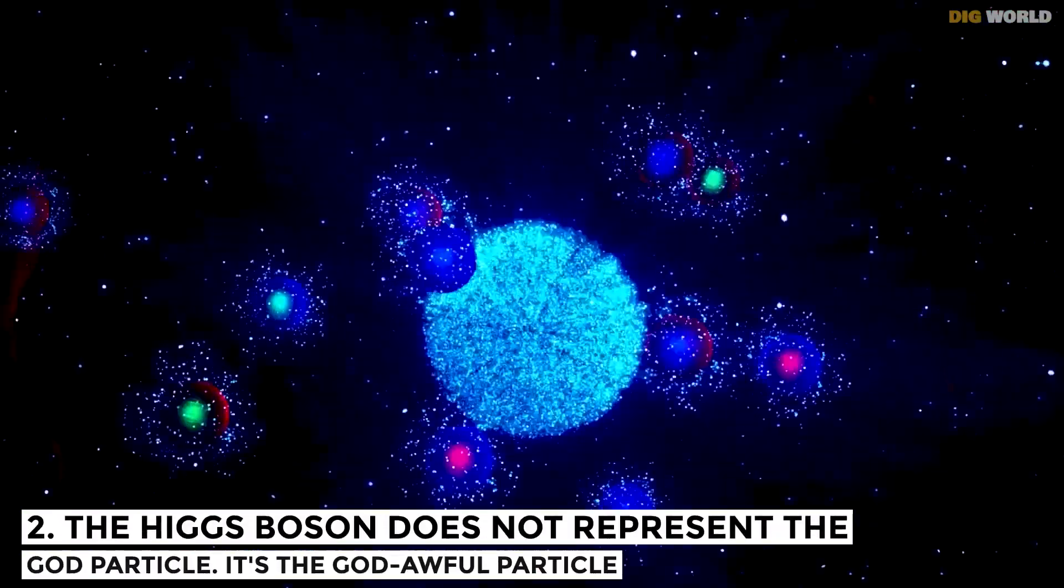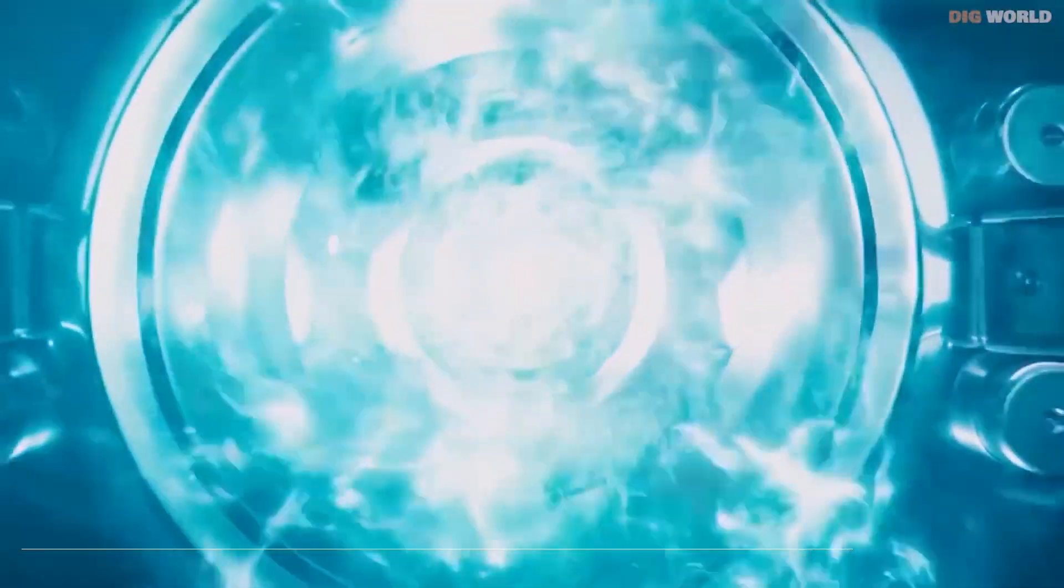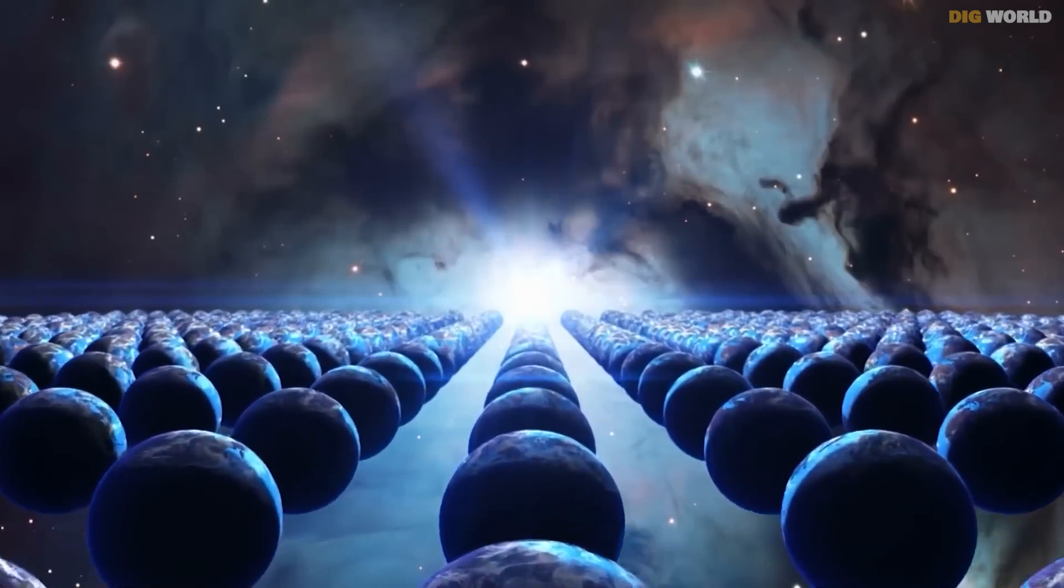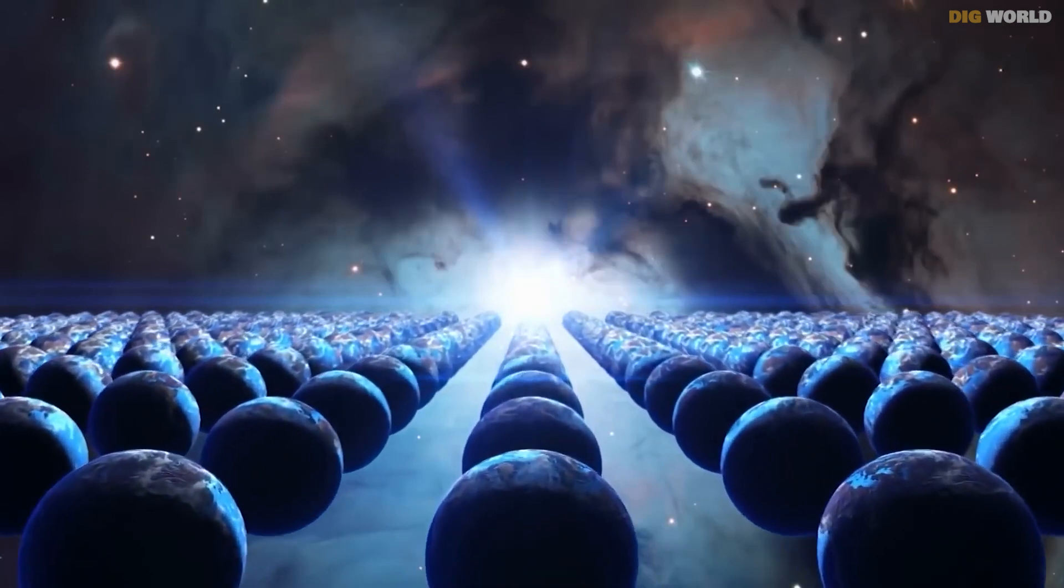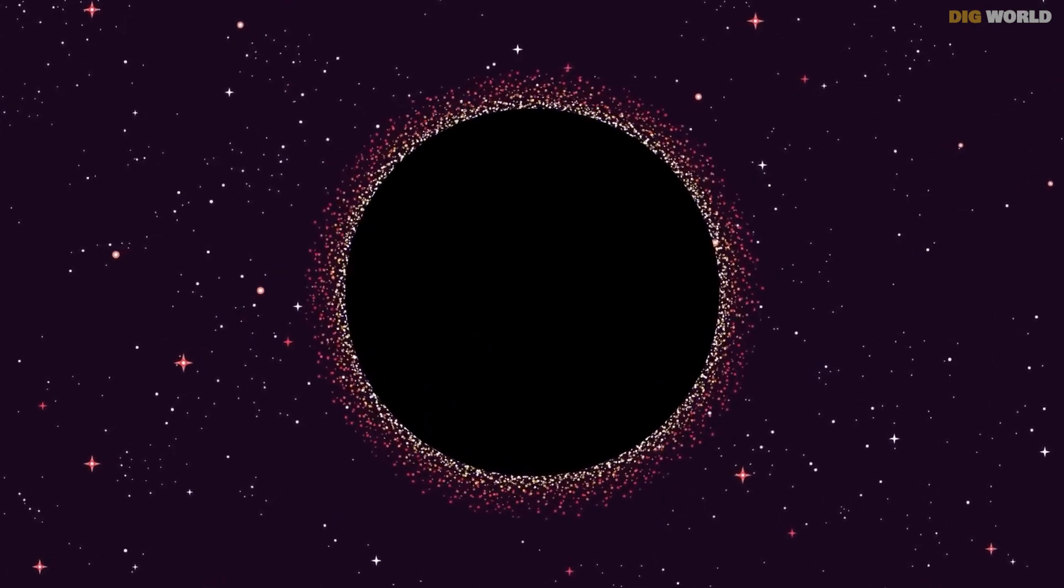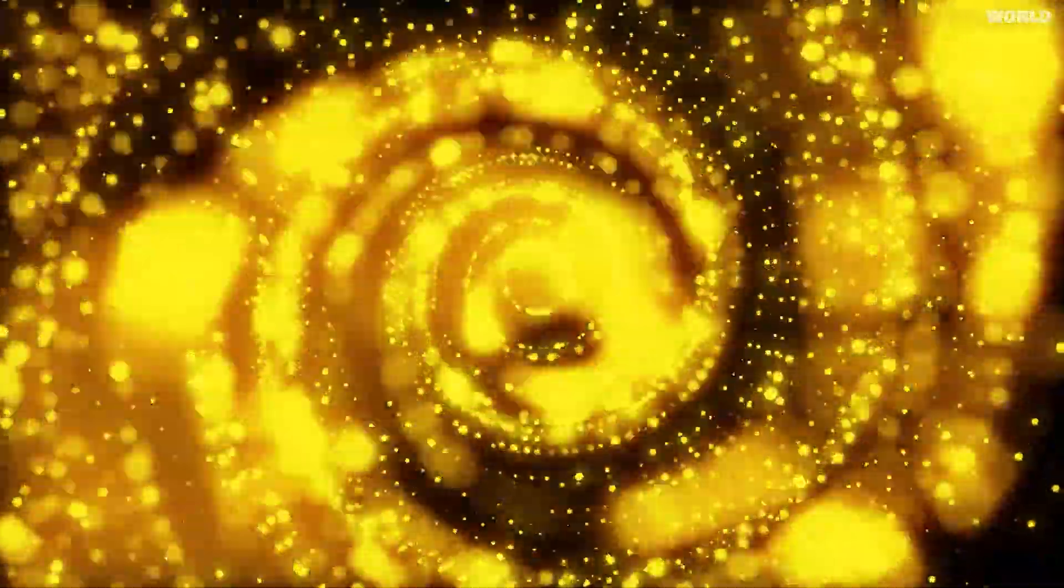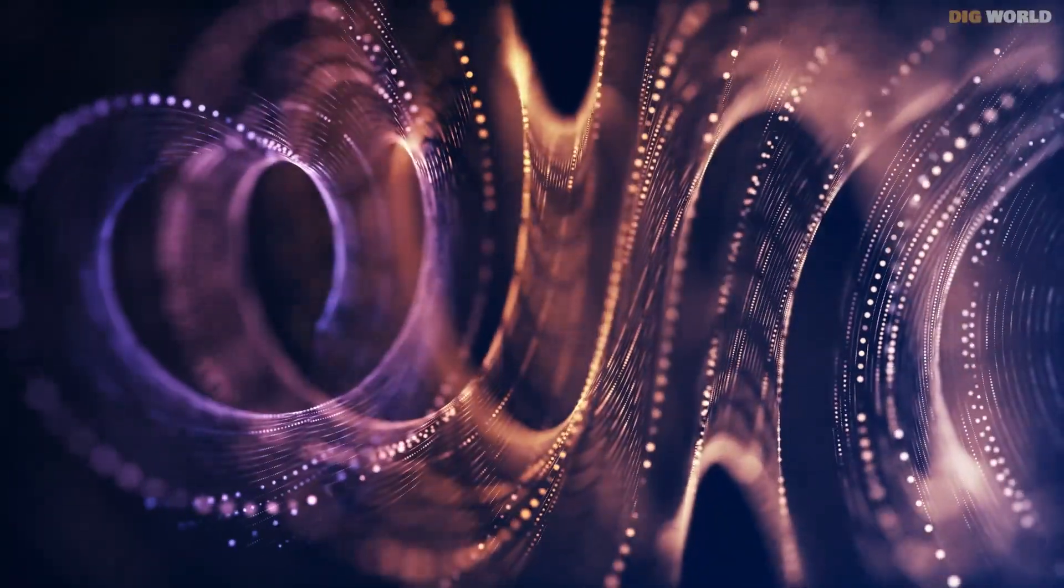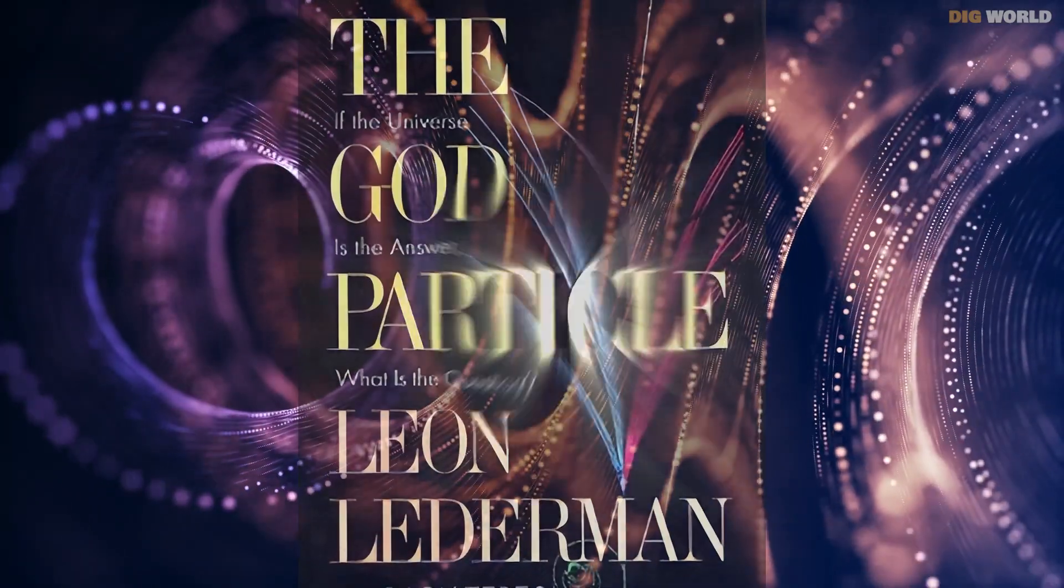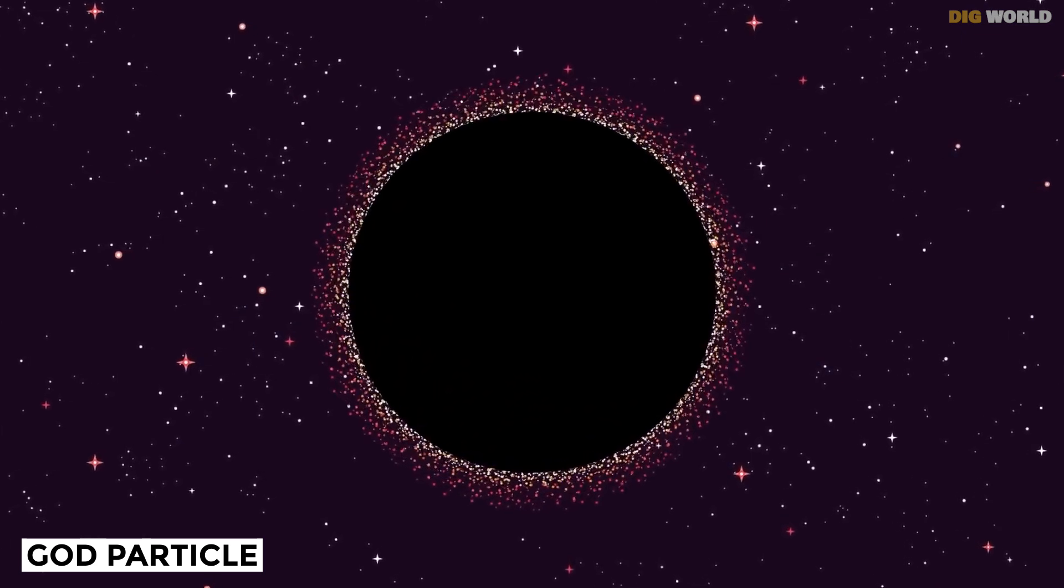Number 2. The Higgs boson does not represent the god particle. It's the god-awful particle. Before the Higgs boson was discovered on July 4th, 2012, scientists had a hypothesis but no proof for how fundamental particles like electrons and quarks gained their mass. The Nobel Prize-winning physicist Leon Lederman planned to call his 1993 book the goddamn particle. Sensing that this would be too contentious, his publishers changed it to the god particle, which irritated people who feel that religion and science are different realms.